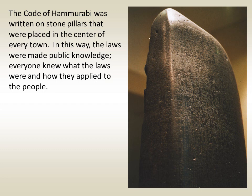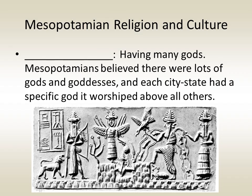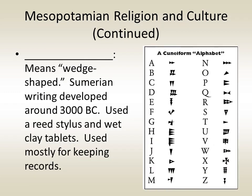The Code of Hammurabi was written on massive stone pillars placed in the center of every town, making the laws public so everyone knew what they were and how they applied. Mesopotamia, like many ancient civilizations, was polytheistic — having many gods — and each city-state had a specific god it worshipped above all others. The ancient Sumerians were the first group to develop writing; their system was called cuneiform, meaning wedge-shaped, referring to the reed stylus they used on wet clay tablets, mostly for keeping records.